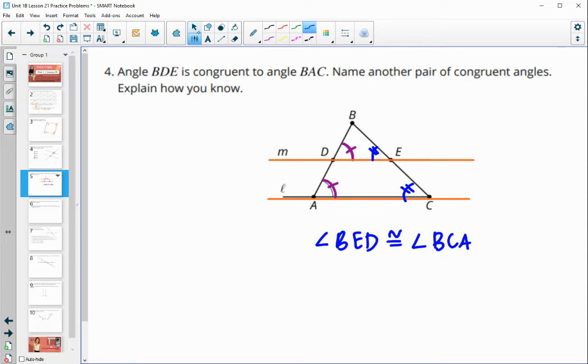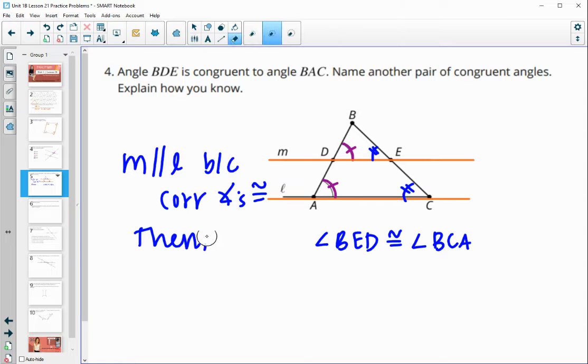And again, we know because corresponding angles force M and L. So M is parallel to L because of the corresponding angles being equal. So the ones that they gave us, then we know that other corresponding angles are congruent as well. So then we know that these are congruent because they're corresponding.